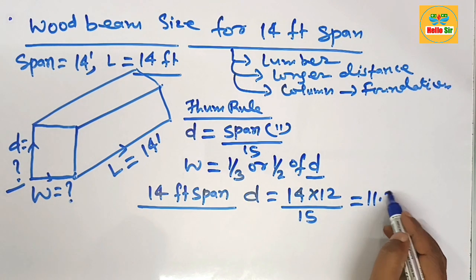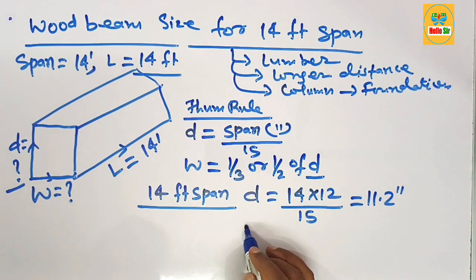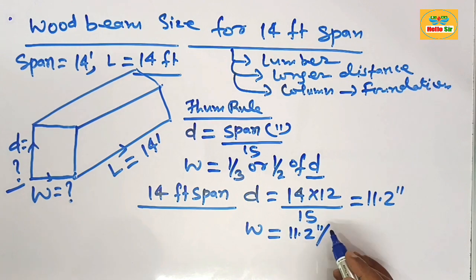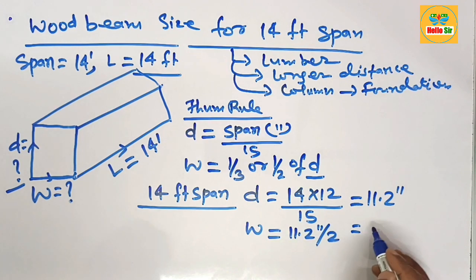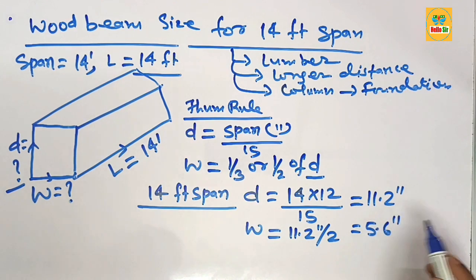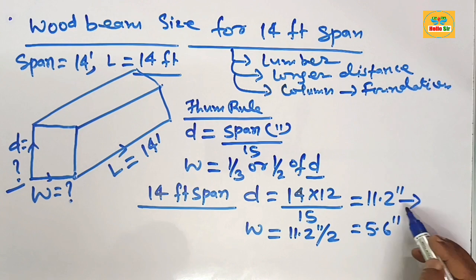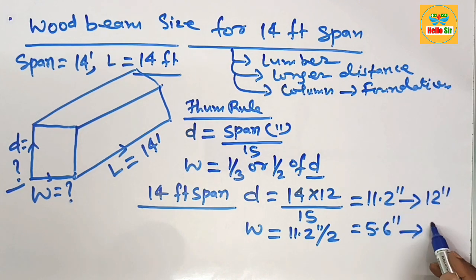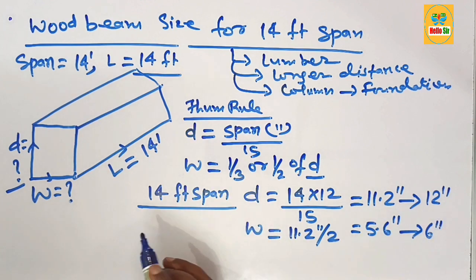to about 11.2 inches. And the width section of the beam is depth of the beam divided by 2, which will come to about 5.6 inches. We convert this one equal to 12 inches and this one equal to 6 inches. It